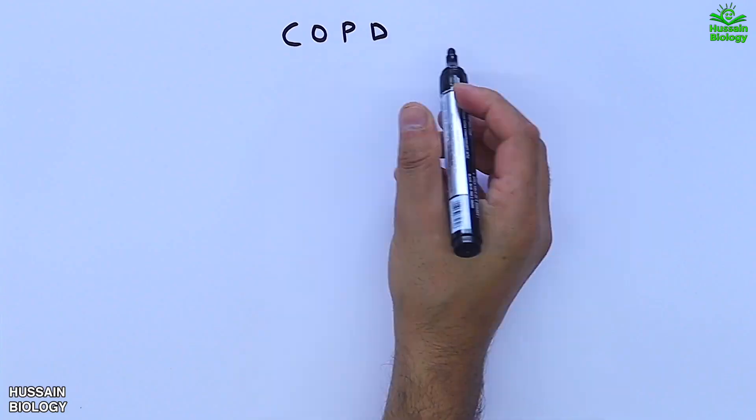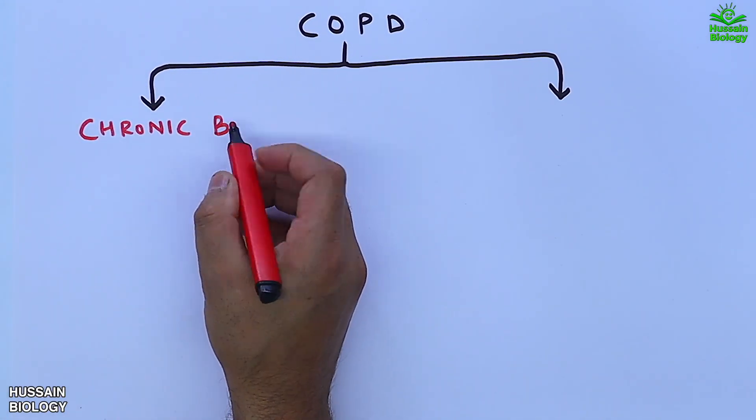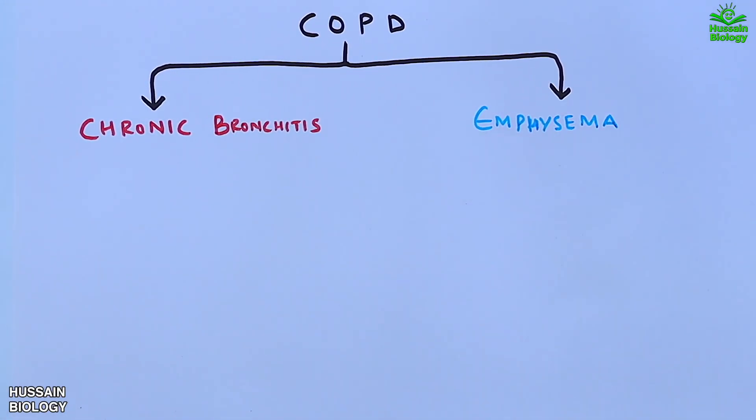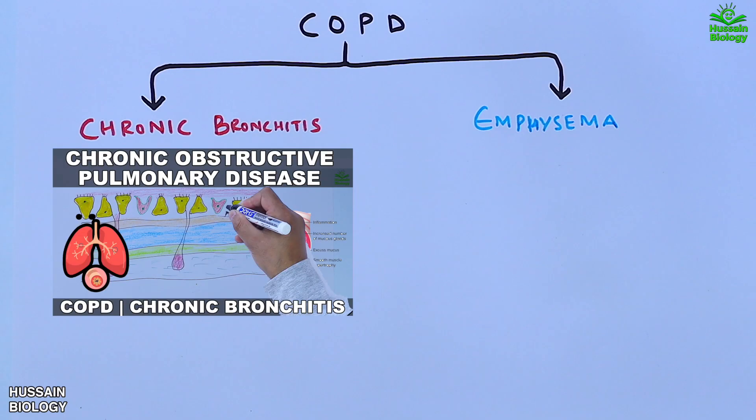In the previous video we discussed COPD, which has two types: chronic bronchitis and amphysema. Chronic bronchitis has already been discussed, the video link is in the description. Now we are left with amphysema, which is also a part of COPD.